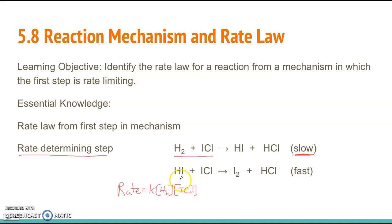Now, when you write out rate laws from mechanisms, it's important to know that a catalyst can be in a rate law equation. But you'll see in the next slide that an intermediate cannot, so we have to substitute those out.